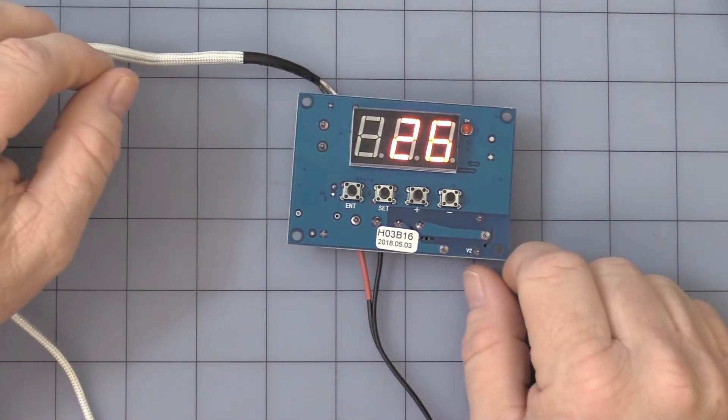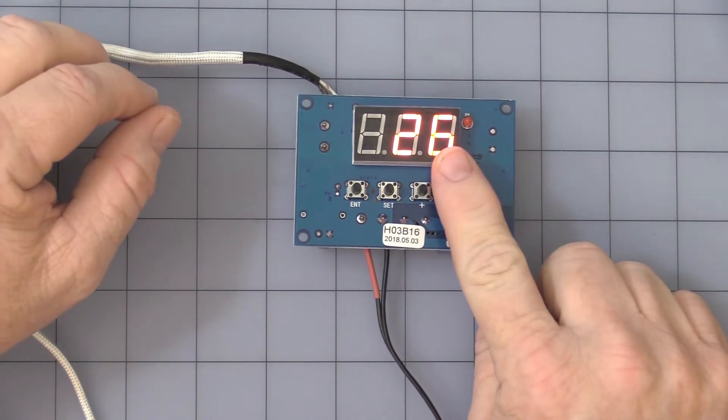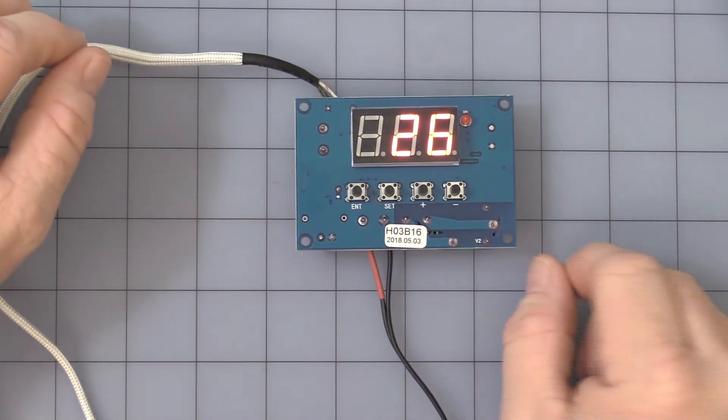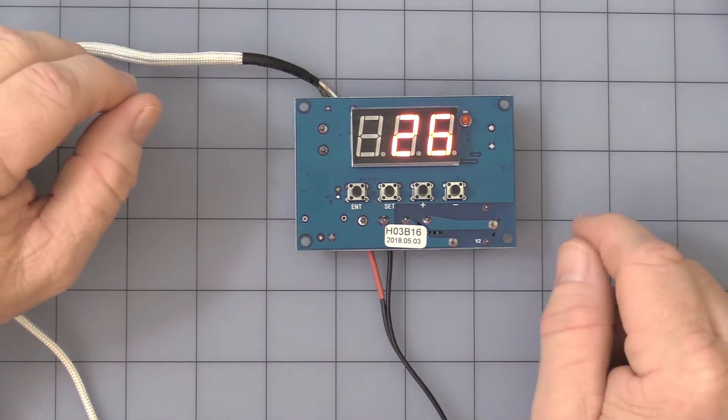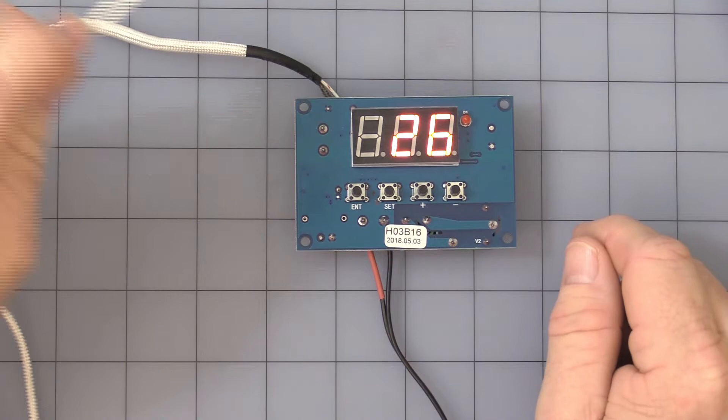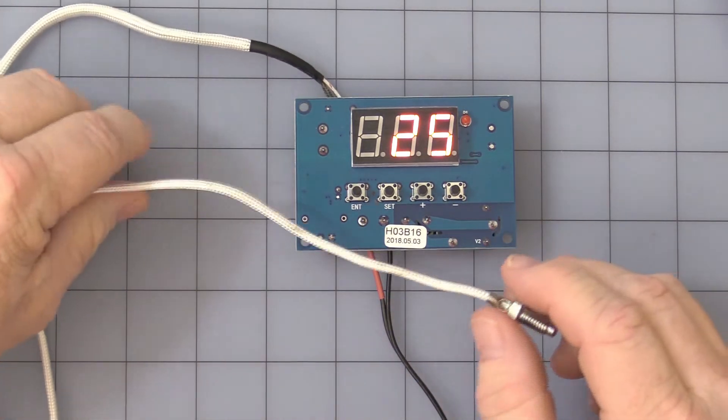It reads Celsius, Celsius only, 1 degree resolution. It works from minus 30 to 999 degrees Celsius with a plus or minus 2 degree accuracy, with about a 1 second refresh rate.